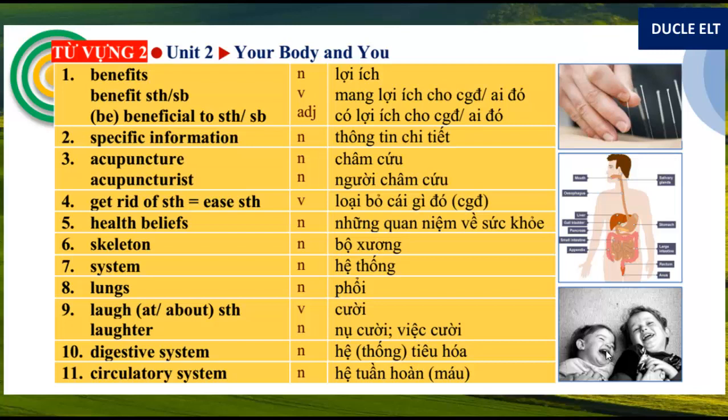The whole section again. 1. Benefics. Benefics something. Benefics somebody. Be beneficial to something. Be beneficial to somebody. 2. Specific information. 3. Acupuncture. Acupuncturist. 4. Get rid of something. Ease something. 5. Health beliefs. 6. Skeleton. 7. System. 8. Lungs. 9. Laugh at something. Laugh about something. 10. Digestive system. 11. Circulatory system. Now we move to the next section.